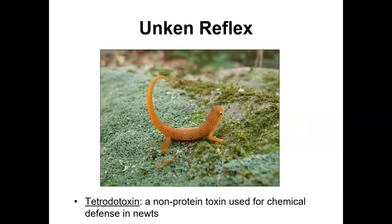This is one of the red efts I found in Southern Indiana. Their skin is highly granular and has skin glands that produce tetrodotoxin, a non-protein toxin used for chemical defense in newts. Oftentimes what you'll see is what's called an unken reflex — a posturing particularly in species with aposematic coloration — where they advertise their toxicity and highlight areas of the body most laden with glandular skin secretions. What this newt is doing is holding its tail up, exposing the area with the most toxins, signaling that if you try to attack, you'll get a mouthful of tetrodotoxin. This unken reflex posturing of aposematic organisms is seen not only in newts but also in some of the frogs we're going to talk about.